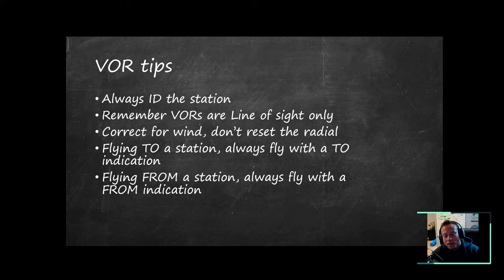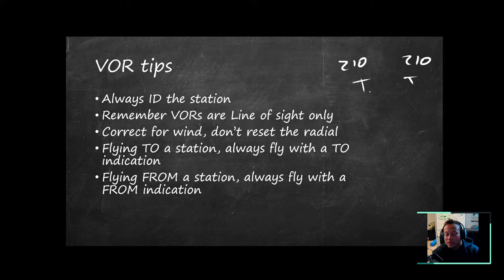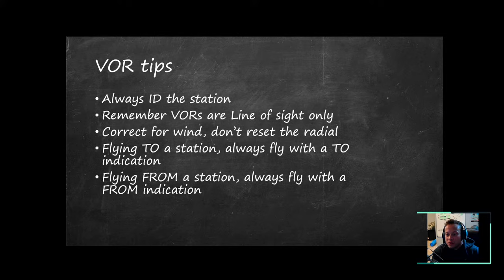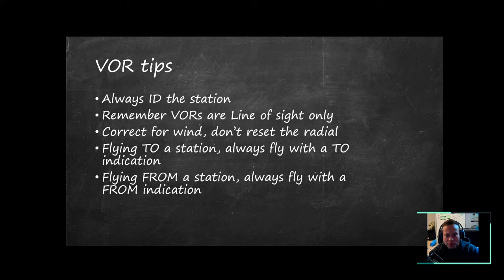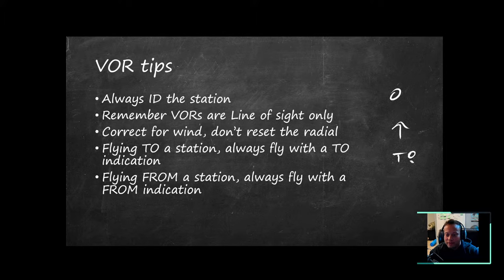VOR tips: always identify the station, verify the Morse code is active. Remember VORs are line of sight only — don't try to use a VOR on the other side of the mountains. If you're on heading and your radial are both pointing the same direction but you're being pushed off course, don't try to reset the CDI — account for wind. If you're being pushed left, give yourself a 10-degree turn right and track that course. You can crab into the wind so the wind pushes you onto the course you want. Always fly with the correct indication: to if flying to, from if flying away. Never try to reverse sense — it's confusing. Don't do it.